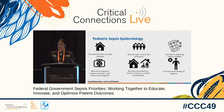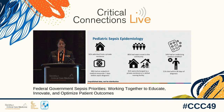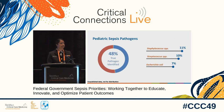For pediatric cases, findings were similar: 92% admitted from a private residence, 86% with sepsis onset in the community, 54% with an underlying medical condition, 38% with an outpatient encounter seven days before diagnosis, 81% discharged to a private residence or skilled nursing facility, and 11% died within 90 days — far fewer than adult patients. In 48% of pediatric cases a true pathogen was identified, with the top three being staph species, strep species, and E. coli — the same pathogens as adults, but in a different order.